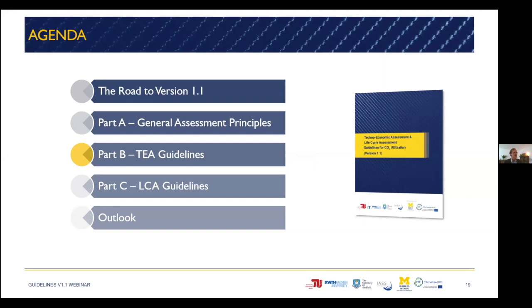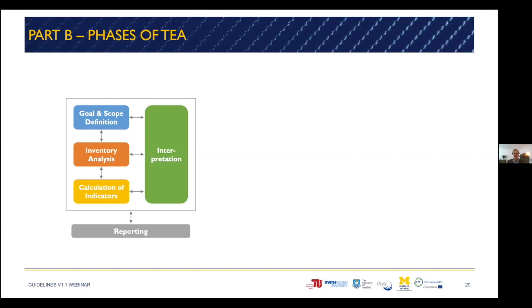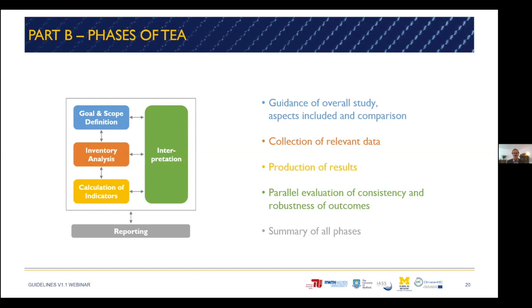Now diving into the techno-economics — part B — meaning that we largely look at technical and especially economic criteria. One of the major adaptations we made to techno-economic assessment was to adapt it to the existing four phases of LCA. The first phase is goal and scope definition, which provides guidance for the overall study and defines what aspects are included and what systems we compare to. The second phase is inventory analysis, where we collect, sort, and document relevant data needed for the assessment. The third phase is calculation of indicators, where we produce the results. The fourth phase is interpretation, where we evaluate consistency and robustness of outcomes.